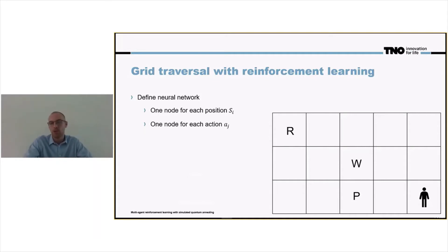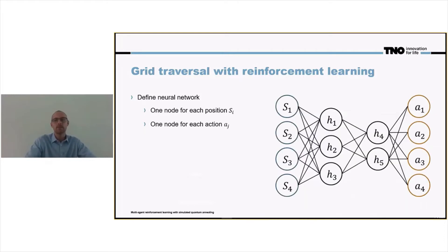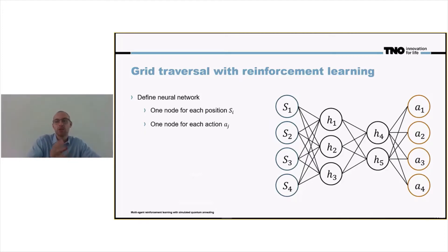We can possibly also introduce a fifth action, which is to remain steady, to take no action. This gives us this neural network.